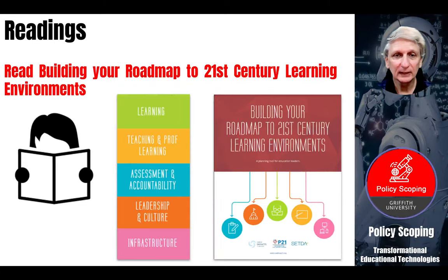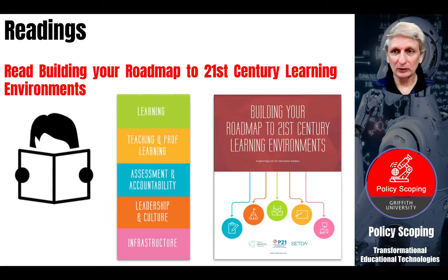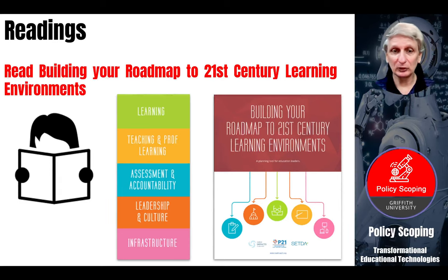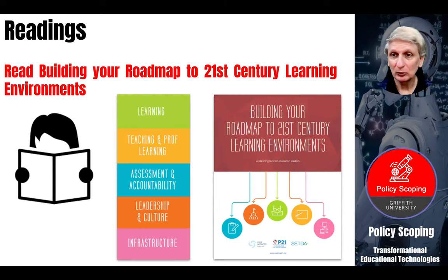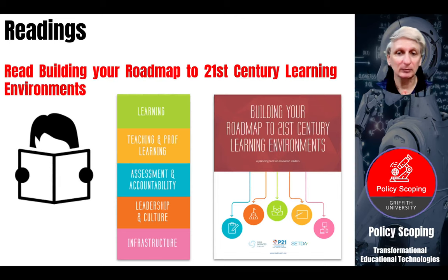The first of these readings is the Roadmap for 21st Century Learning Environments. This breaks down five different areas of an educational organisation that have the potential for significant transformation: the learning processes, the teaching and professional learning processes, the assessment and accountability processes, the leadership and cultural processes, and the infrastructure available to support these various processes.